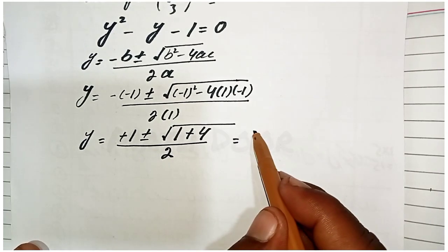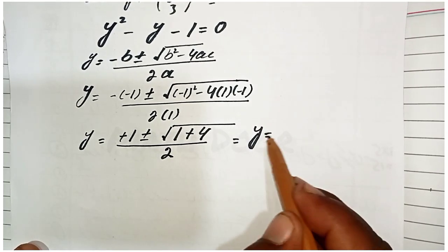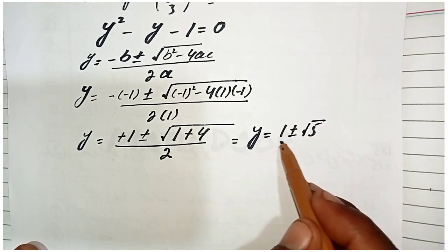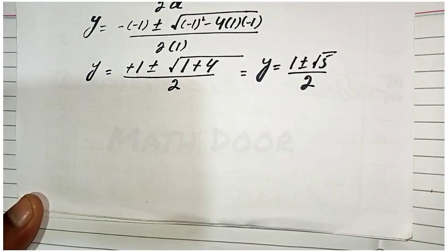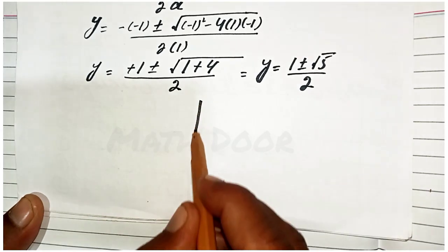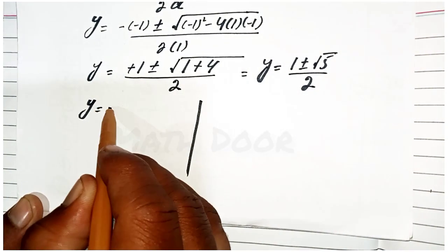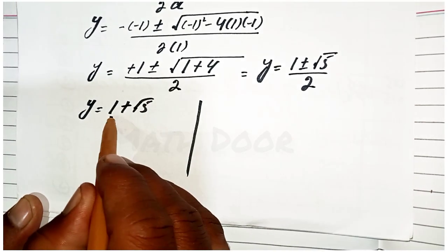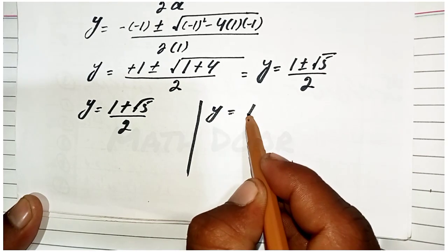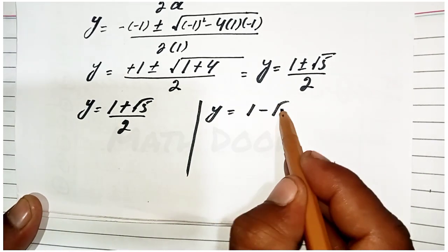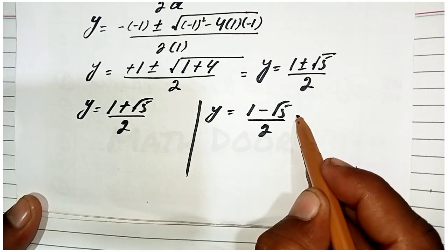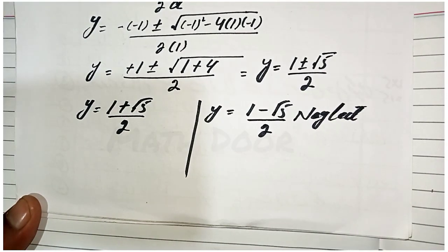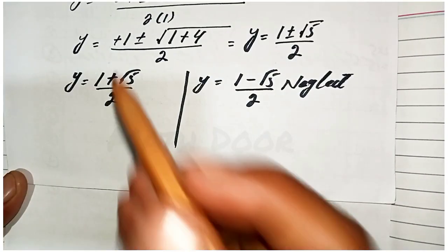This gives y equals (1 plus or minus √5) over 2. So the two factors are: y equals (1 + √5)/2, or y equals (1 − √5)/2. We neglect the second solution because it is negative, giving a complex number.